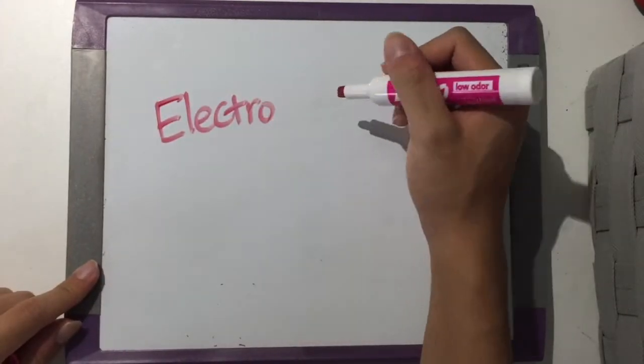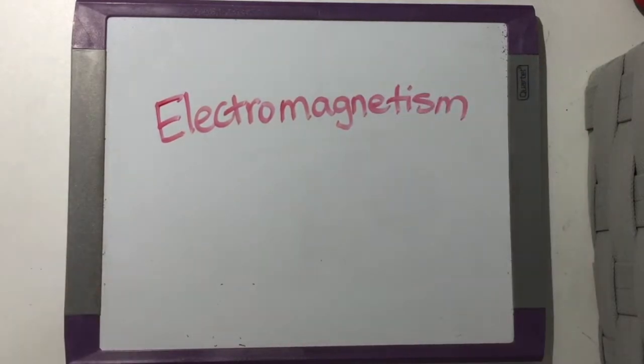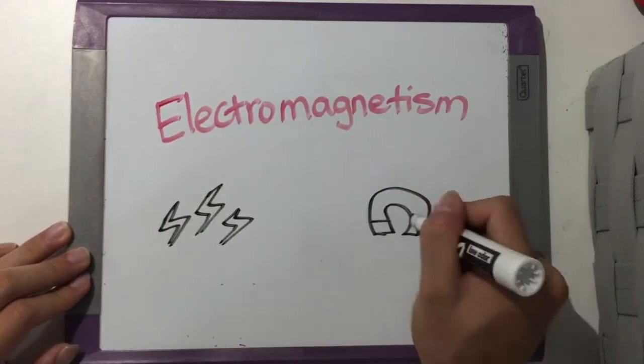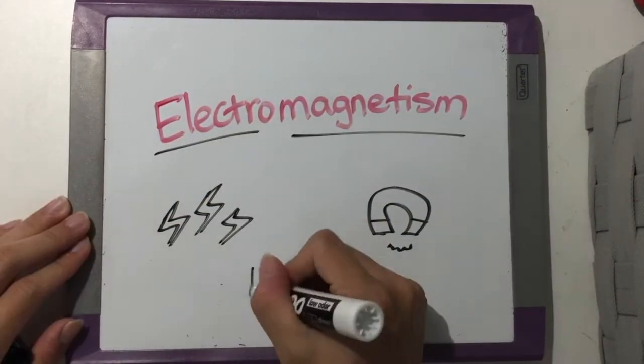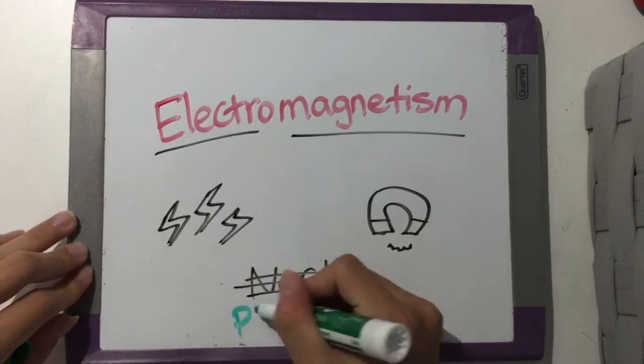As the name suggests, electromagnetism combines the concepts of electricity and magnetism because some very smart people figured out that they were actually connected with each other in the 19th century.